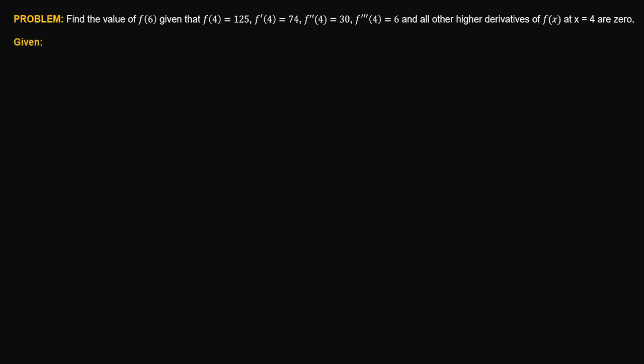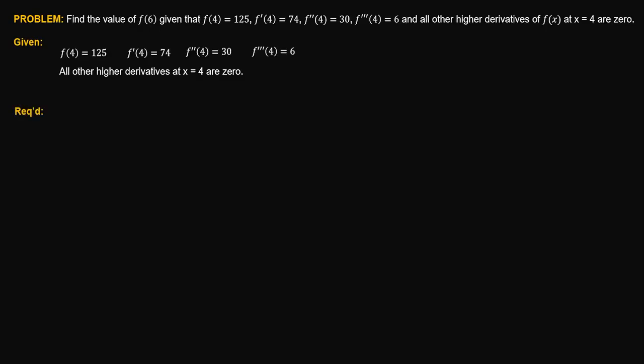So let us write first the given quantities. We have the function value at point x equal to 4 is equal to 125. The first derivative at the same point is equal to 74, the second derivative is 30, the third derivative is equal to 6. All other higher derivatives at x equal to 4 are assumed to be equal to 0. We are required to compute the function value at x equal to 6.